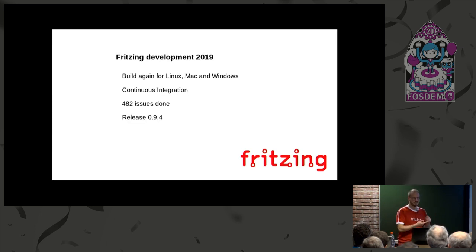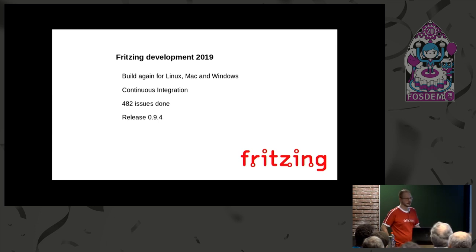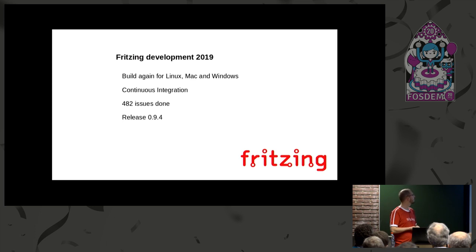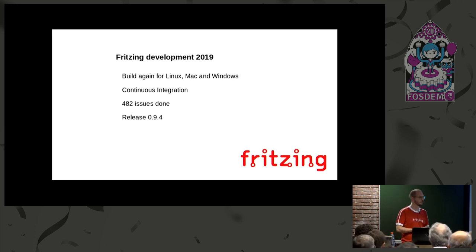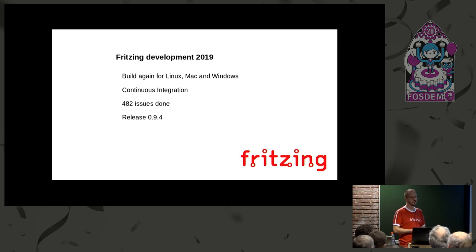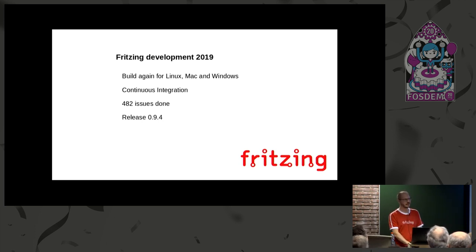So what can we do about it? First step: make it build again on all platforms. That's the first very discouraging thing — if a project can't even be built, why should anyone contribute code? We added continuous integration so we can easily review pull requests and always verify it still builds. We burned down 482 issues from the original 1,100, and 185 new issues were opened during this year — but that's a good sign that the community is alive again.